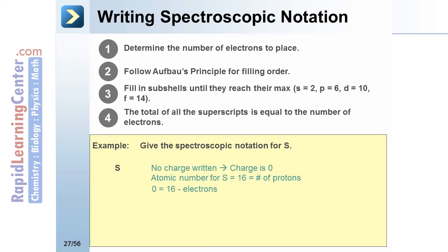Follow Aufbau's principle to begin with level 1s. 1s can hold 2. 2s can hold 2. 2p can hold 6. 3s can hold 2. 3p can hold 6, but we only need 4 to add up to a total of 16.